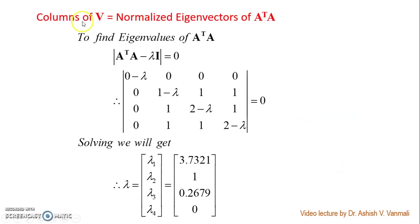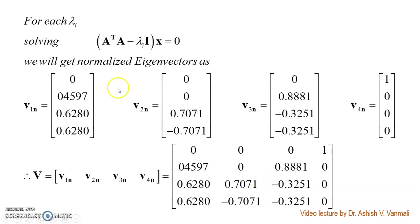Similarly, the columns of matrix V are the normalized eigenvectors of A transpose A. Solve determinant(A transpose A − λI) = 0. This is a 4×4 matrix, giving 4 eigenvalues: λ1 = 3.7321, λ2 = 1, λ3 = 0.2679, and λ4 = 0. For each λi, solve (A transpose A − λi I)x = 0 and normalize to get b1n, b2n, b3n, and b4n. Matrix V is the 4×4 matrix comprising these four normalized eigenvectors.